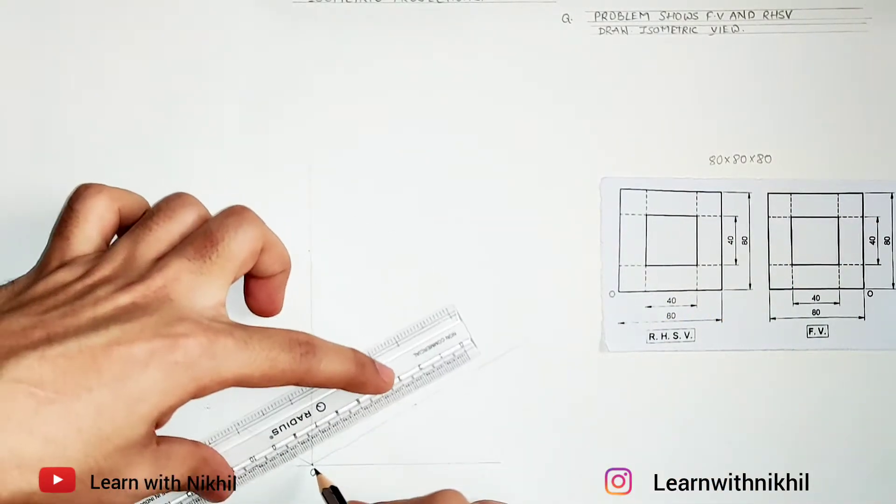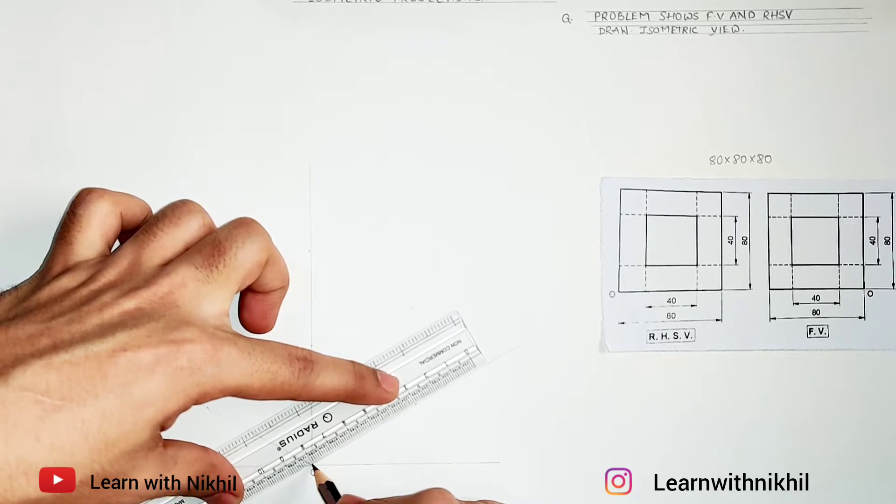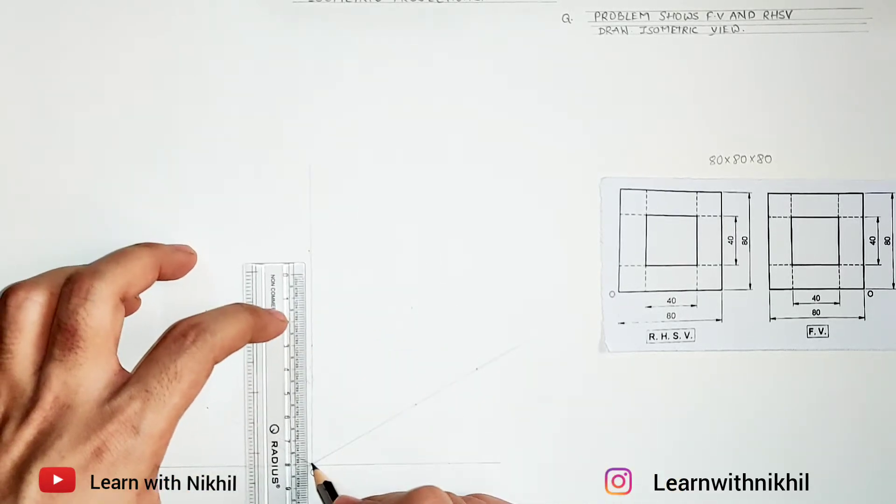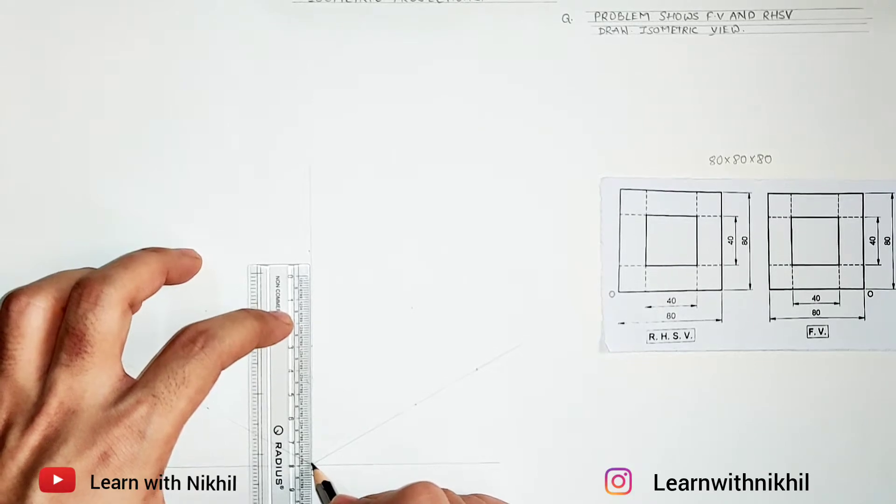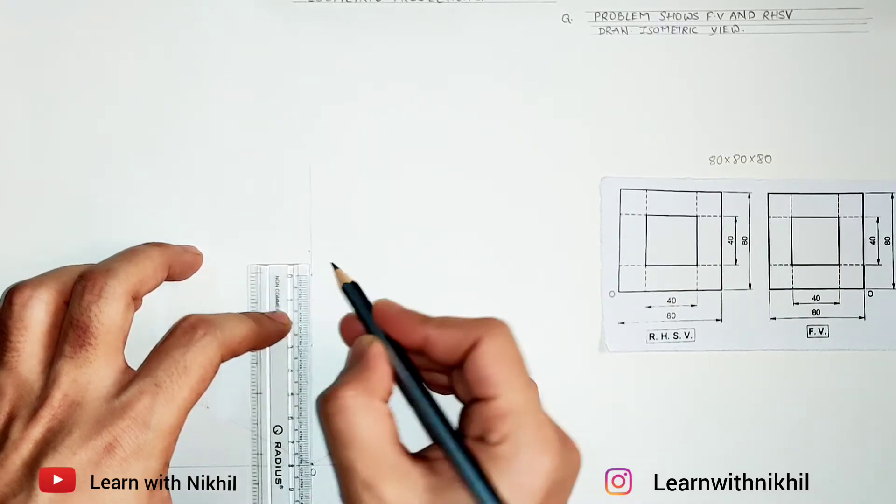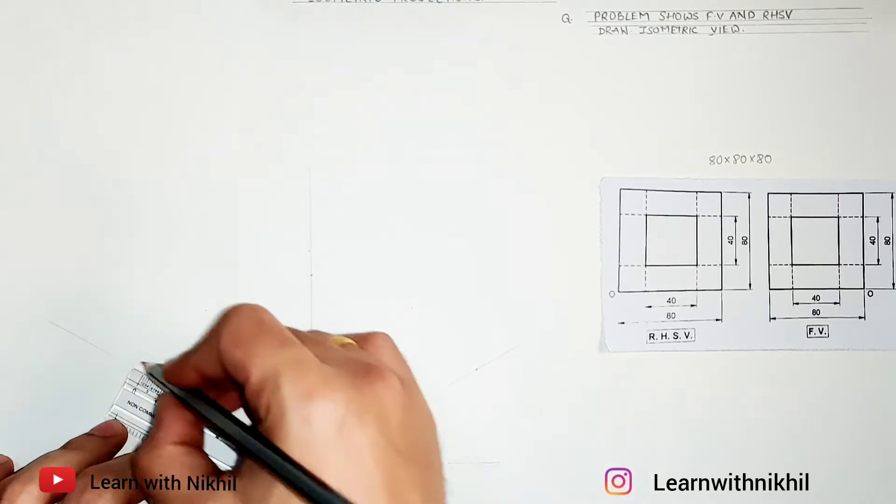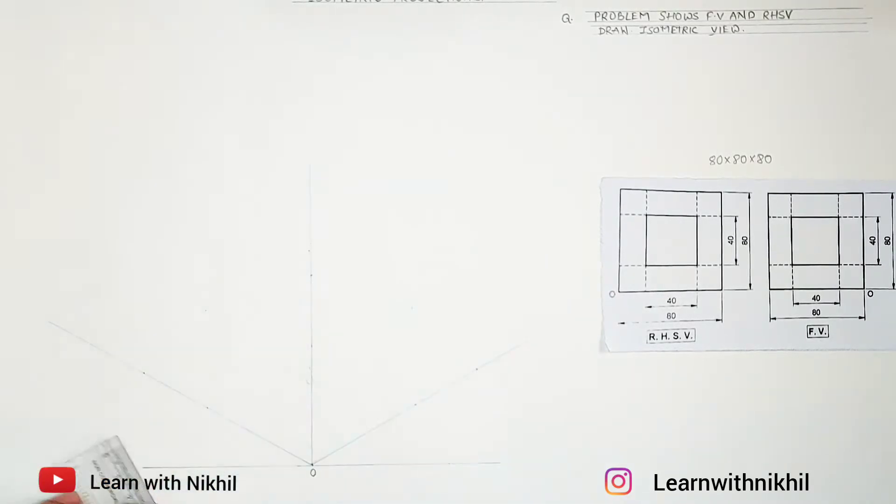From O here will be the right-hand side view. From O here will be the front view. Now as per the dimensions, I'll mark here 80—straight vertical line 80, and on the 30 degree angle line 80, as all the three sides are 80.